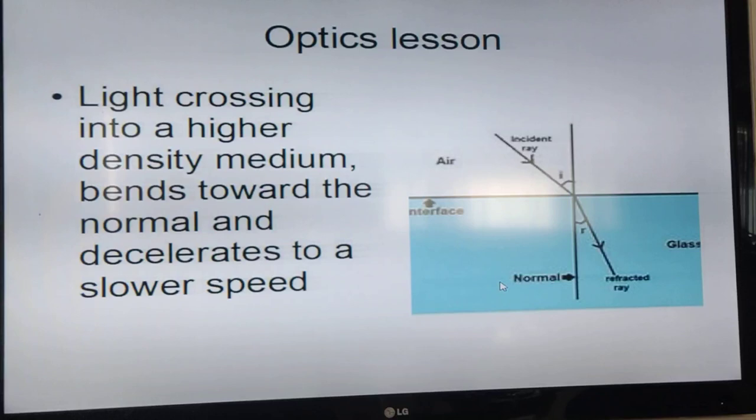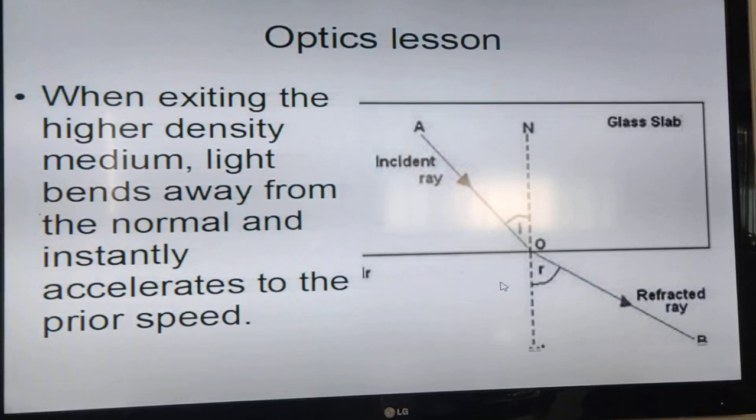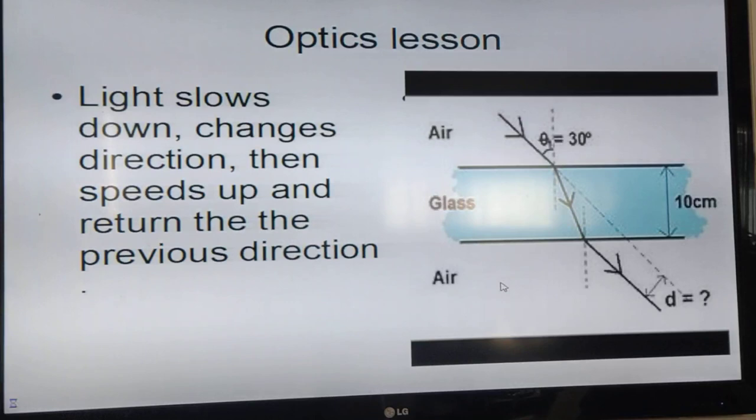Now we're going to have a small optics lesson. When light goes from a low density material into a more dense material, it slows down and bends toward the normal. When it goes from a higher density medium into a lower density medium, right on the surface it bends away from the normal and speeds up at the same time.